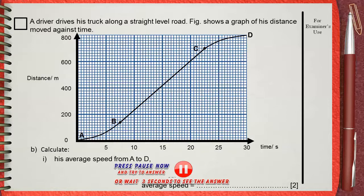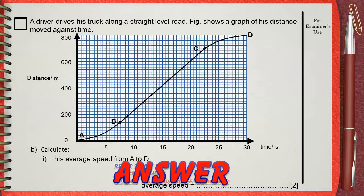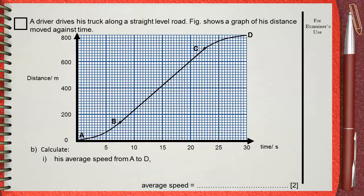Take your time and think. Again, you must notice that this is a distance-time graph, not a speed-time graph. Average speed is known as the total distance divided by the total time.